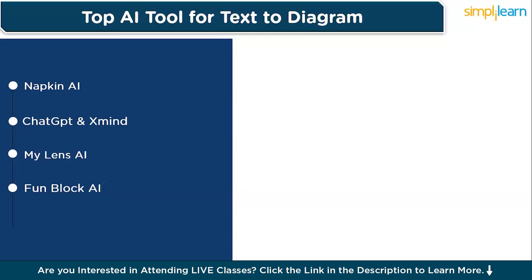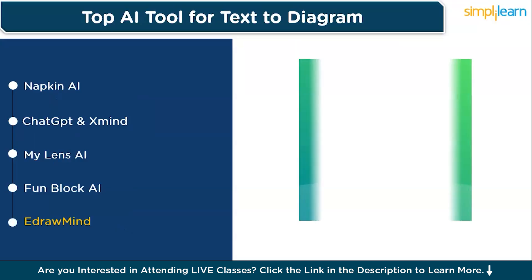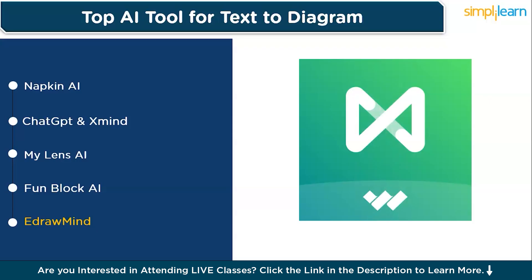Our final tool is eDrawMind. eDrawMind is an excellent tool for creating mind maps, flowcharts, and other visual diagrams based on text input. It offers powerful AI-driven capabilities that automatically format and lay out your text into clear, structured visuals — making it ideal for brainstorming sessions, project planning, and idea visualization. eDrawMind also provides a range of customizable templates so you can start creating without having to design from scratch.